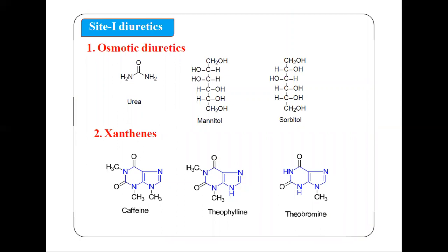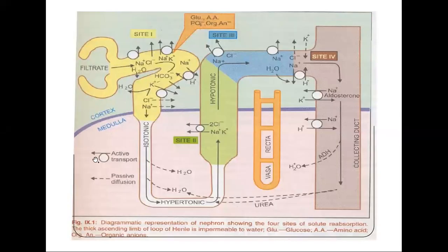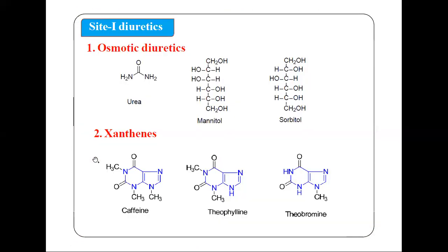Now let's do the classification. As mentioned, we have 4 sites where diuretics act. Diuretics can be divided into site 1, site 2, site 3, and site 4 diuretics. Site 1 diuretics are further divided into 3 classes.